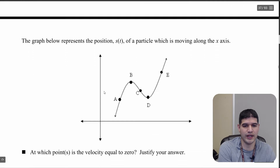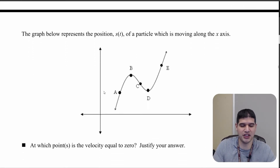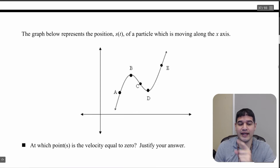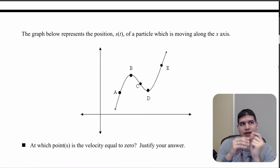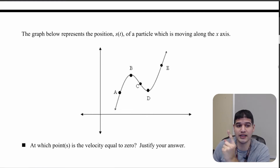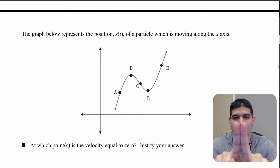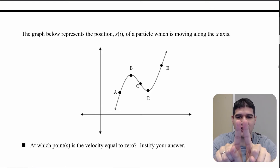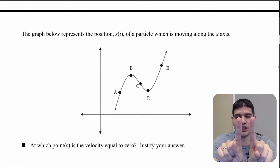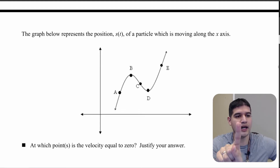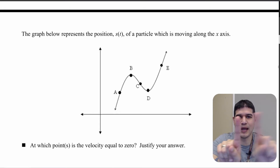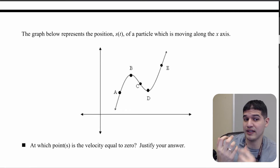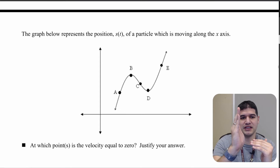Now we have a graph that represents position, using the function s of t, as the particle moves along the x-axis. Think about the particle going back and forth over time. It starts at the origin, moves further away to point b, then gets closer and closer to point d, then moves further and further away up to e and toward infinity. That's how the particle's motion looks in this graphical format — it's simply time versus position on the y-axis.